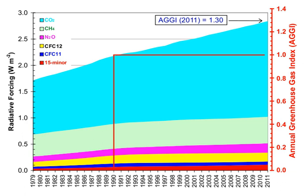Examples of the atmospheric lifetime and GWP relative to CO2 for several greenhouse gases are given in the following table. The use of CFC-12 has been phased out due to its ozone-depleting properties. The phasing out of less active HCFC compounds will be completed in 2030.